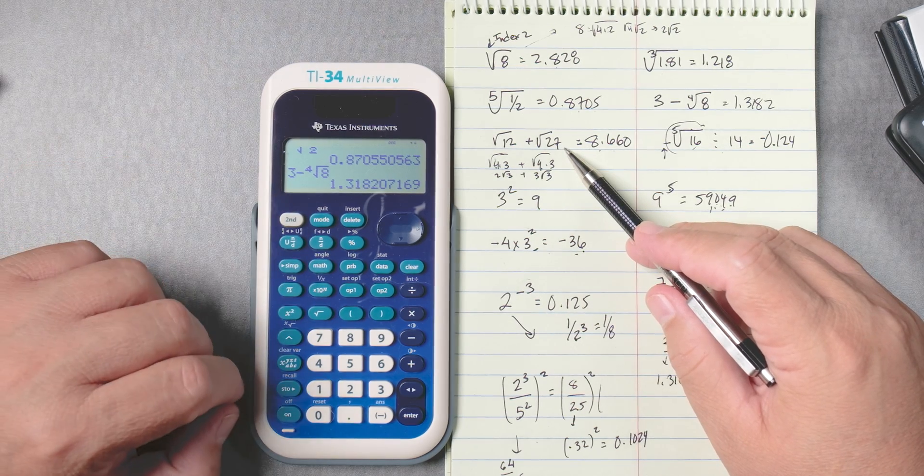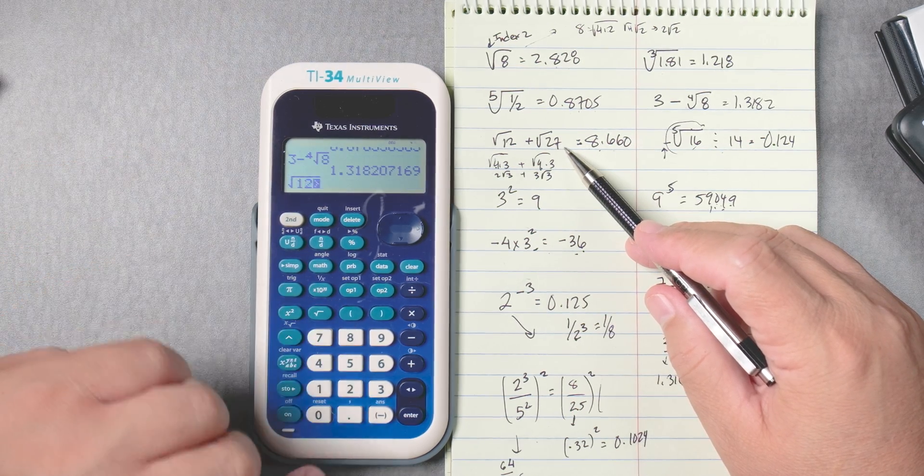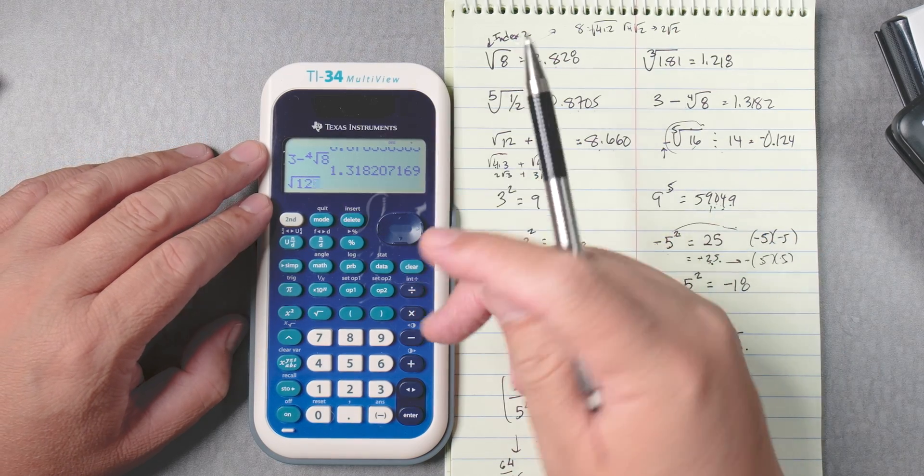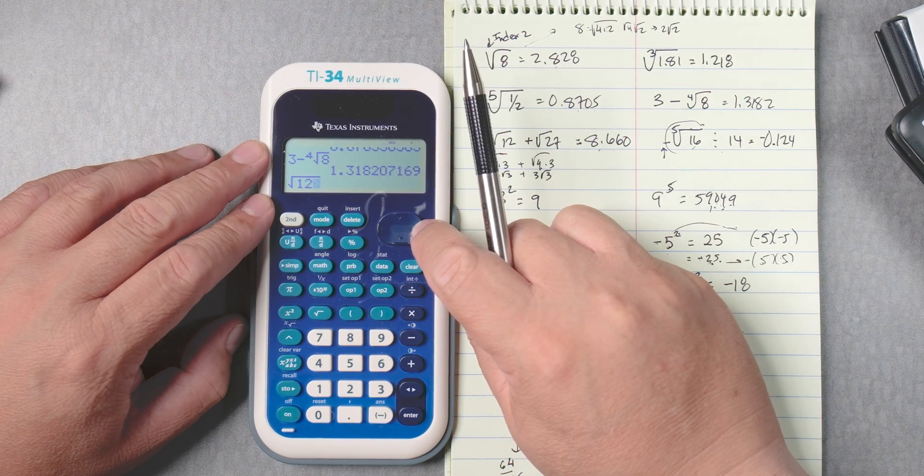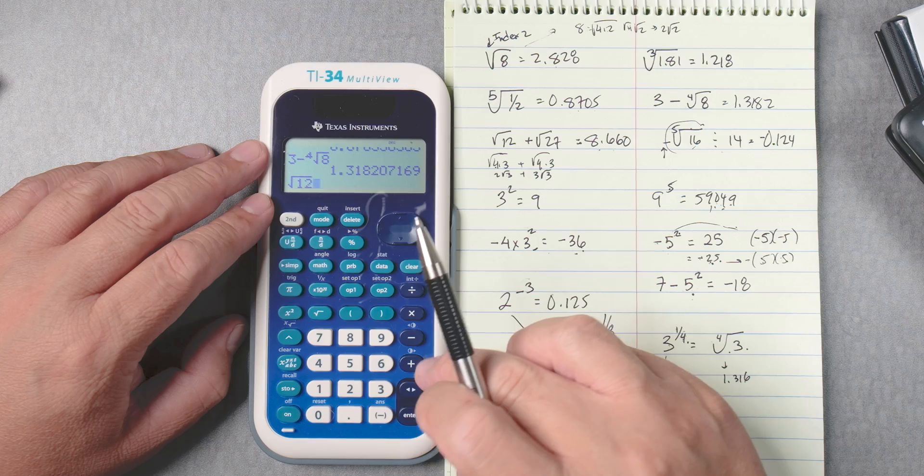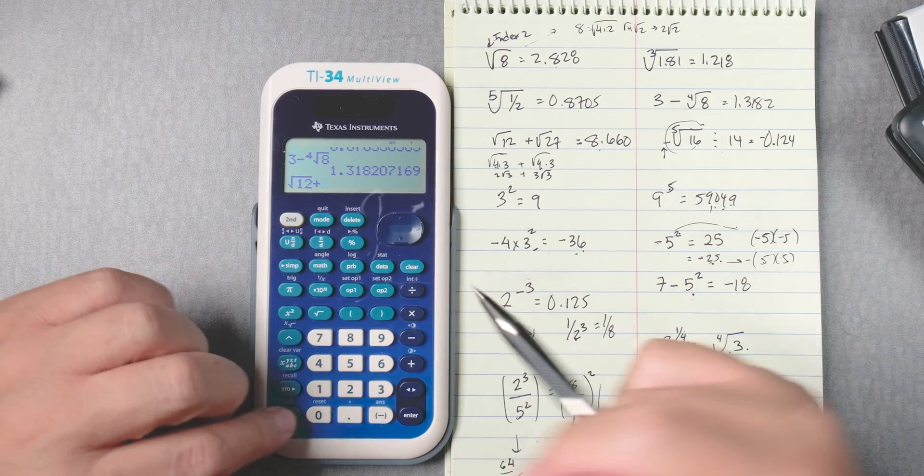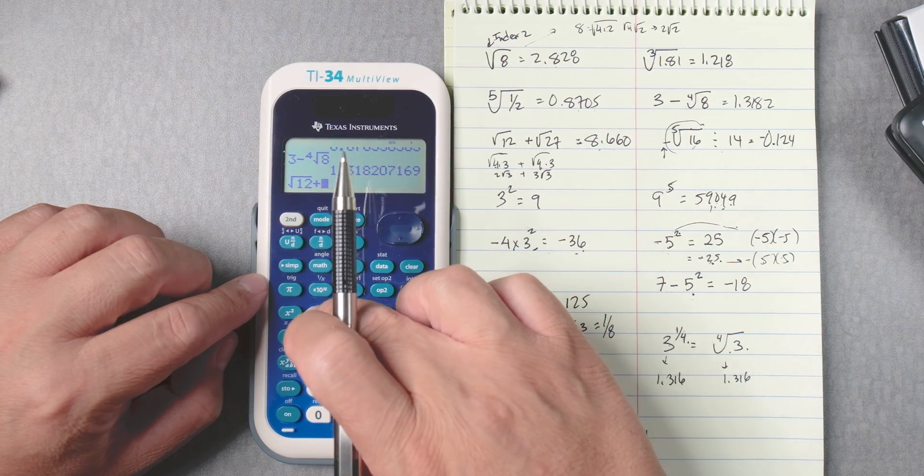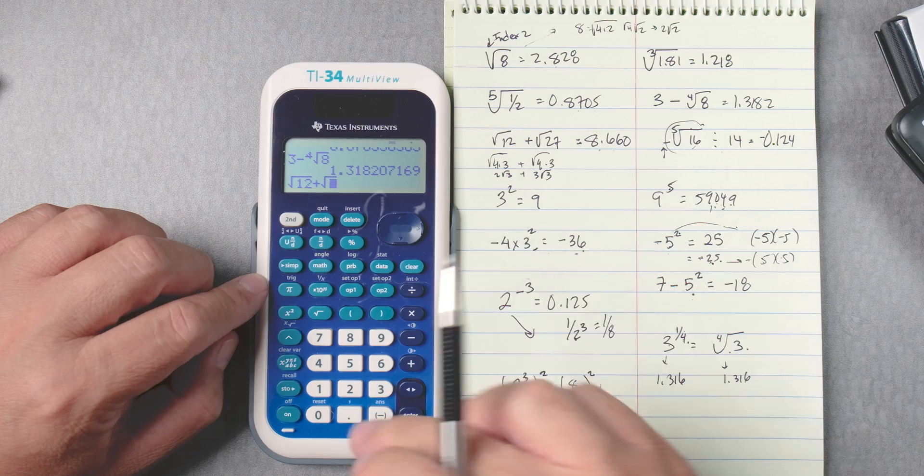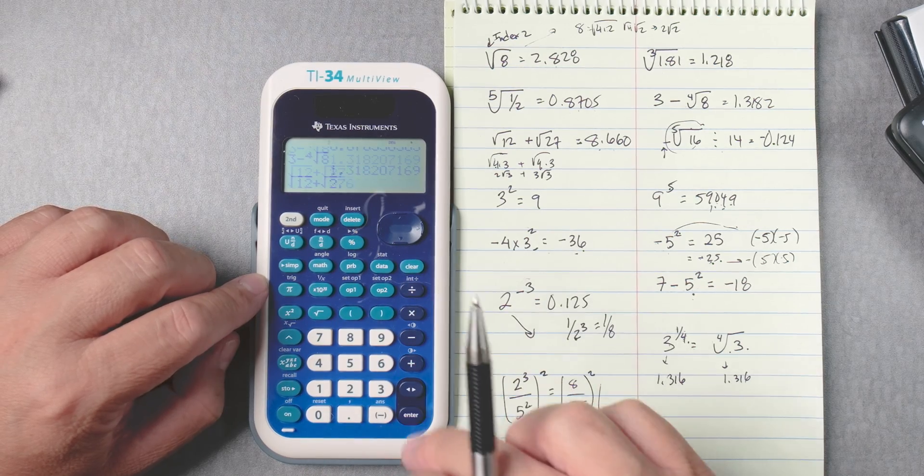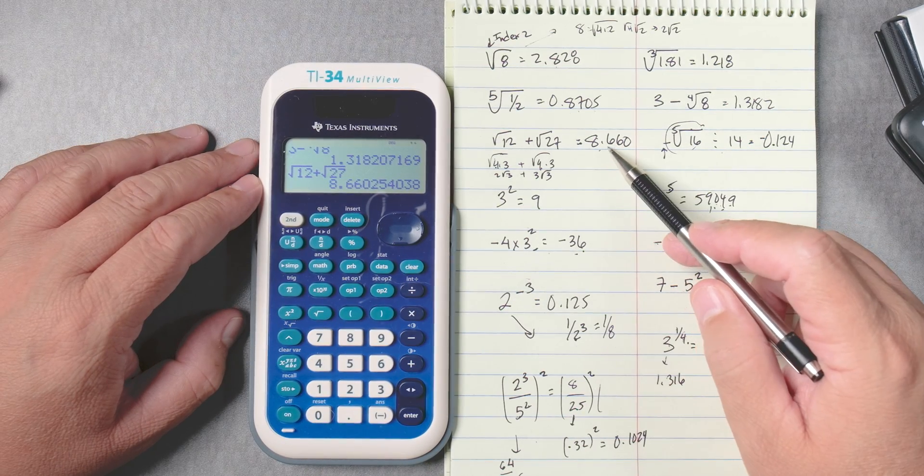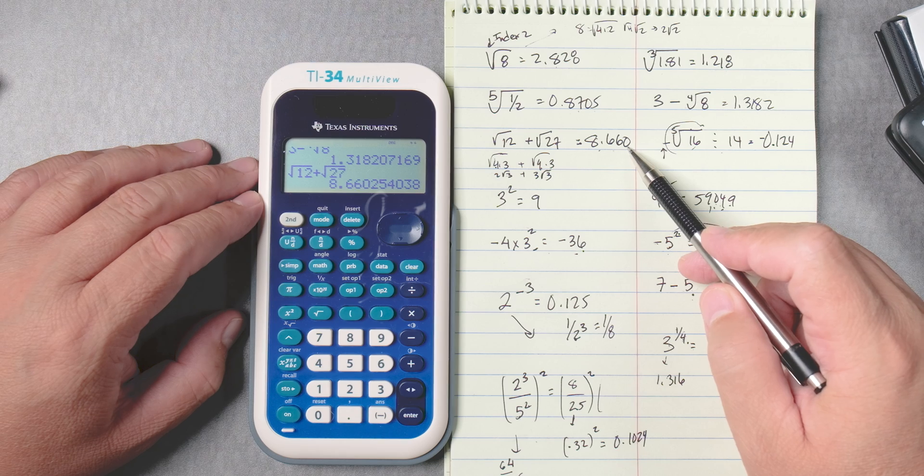Okay, let's do this one. This one's the square root of 12, and then you're still inside the root. Press the arrow key that way, to the right, and then square root of what? 27. Enter. 8.660.